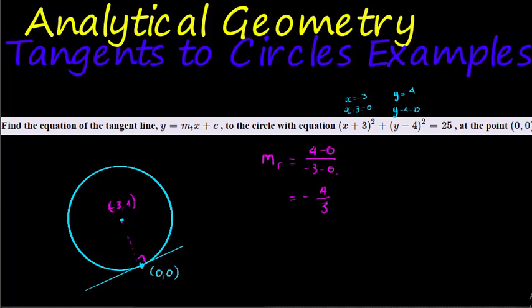The next value to find is the gradient of my tangent. So all we do is flip this value around, that's 3 over 4, and give it the opposite sign. This one's negative, this one is positive. Alternatively, you could have just substituted into the formula: the gradient of the radius times the gradient of the tangent equals